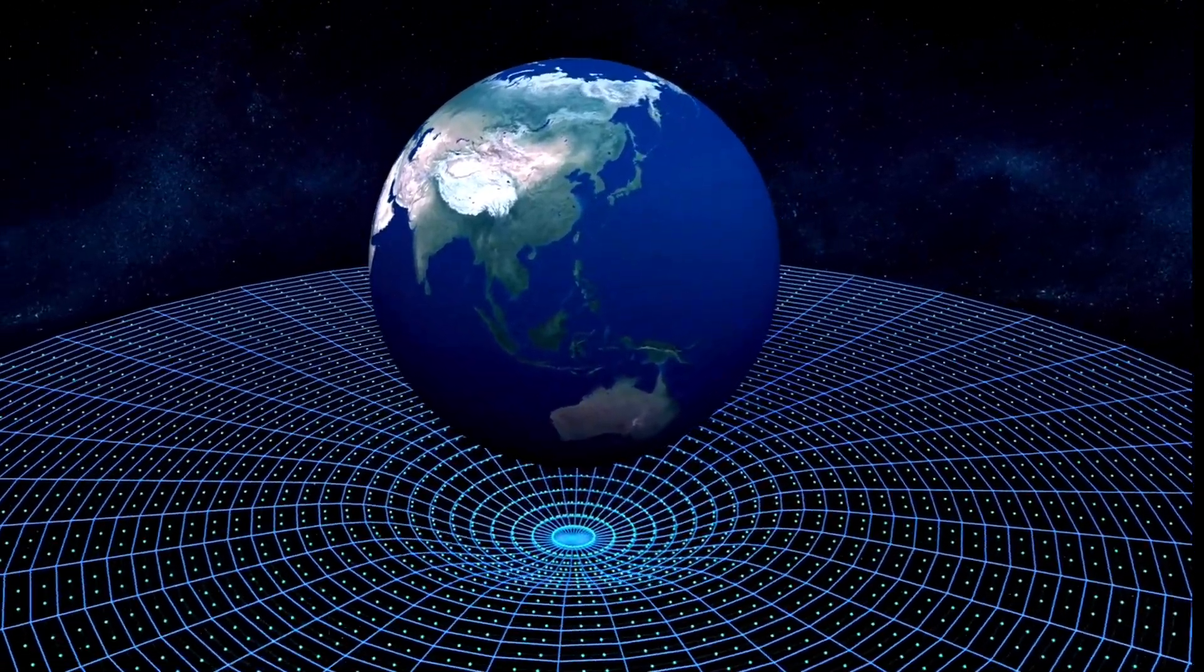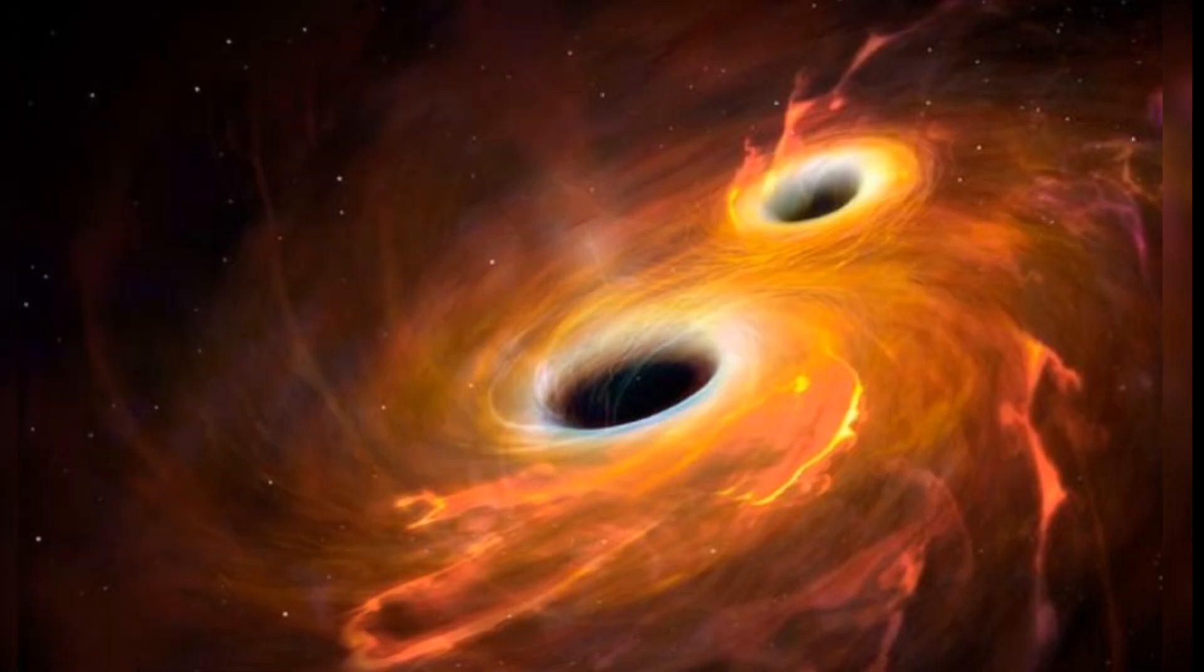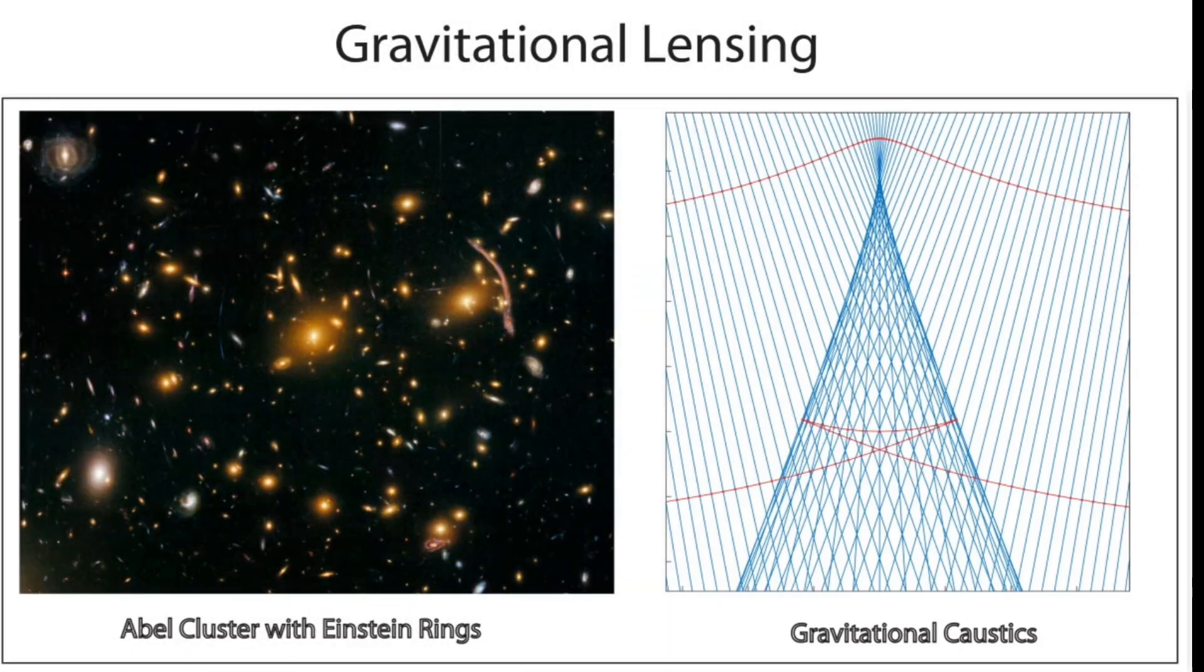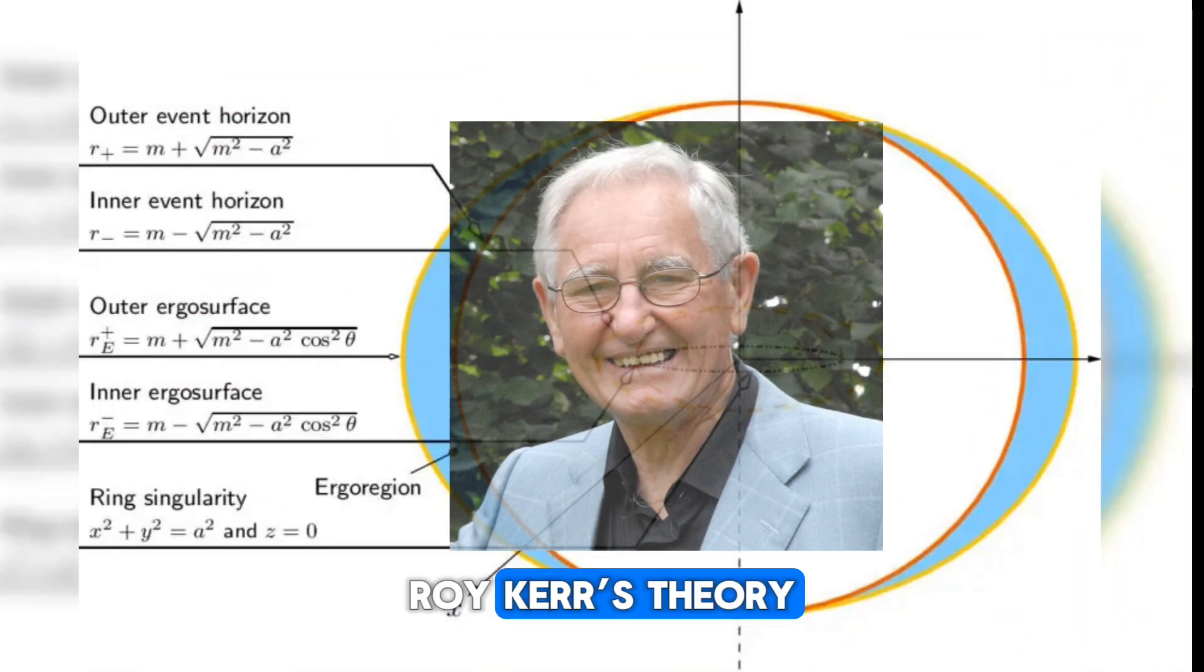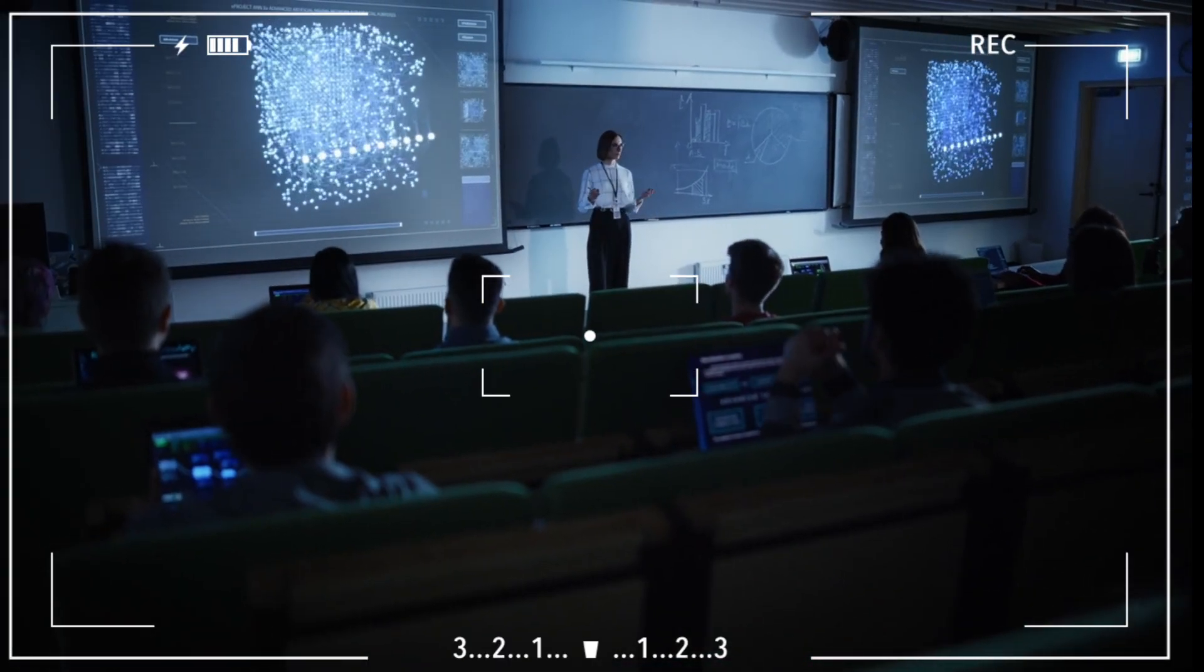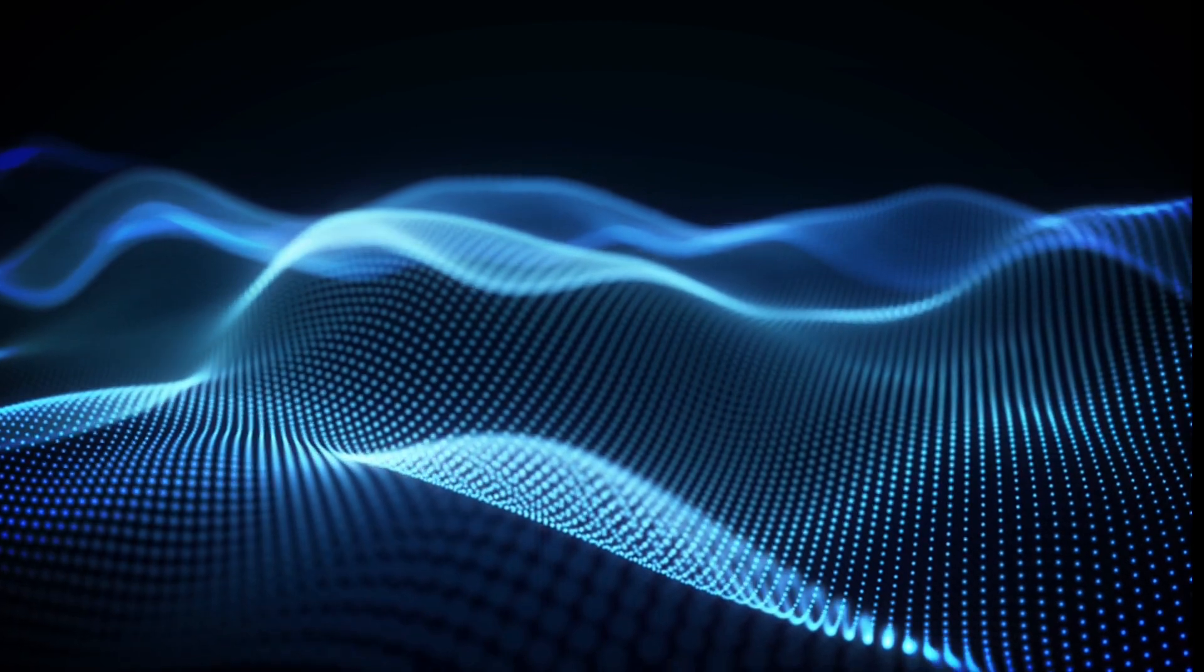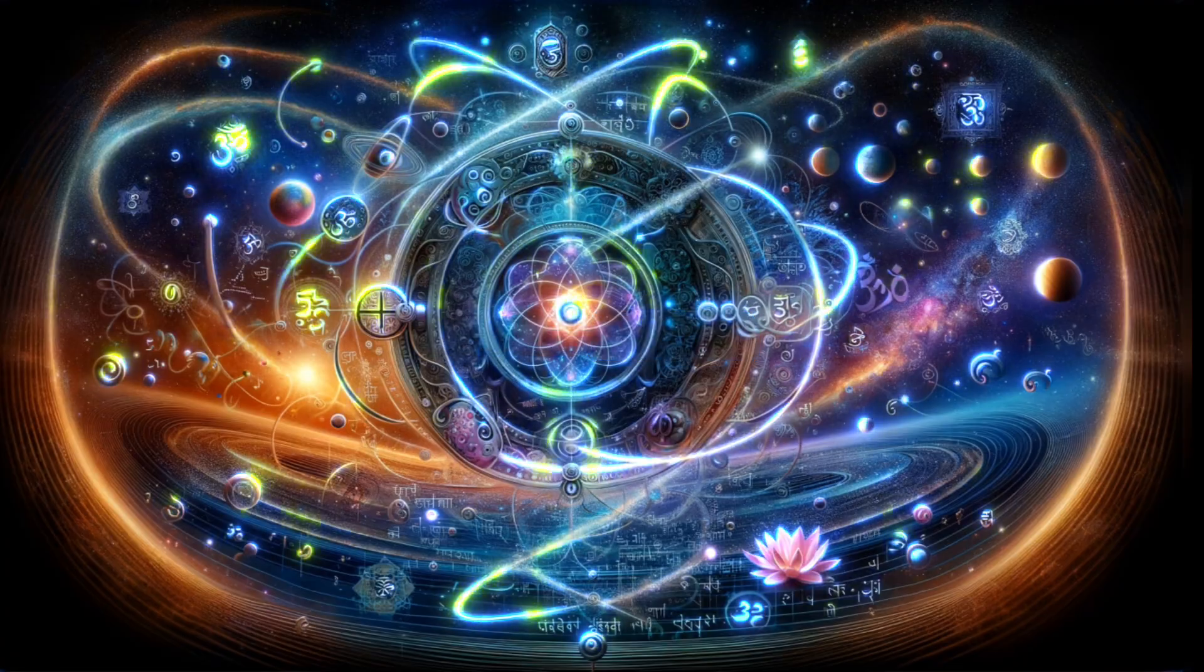Despite the advancements and refinements, the current understanding of the general theory of relativity remains highly valuable. The introduction of the concept of the ring singularity can be seen as an enhancement or upgrade to the original general theory of relativity. As we progressed from using Newton's gravity for rocket launches to Einstein's general theory of relativity for phenomena like gravitational lensing, Reicher's theory now contributes to our understanding of the interior of black holes. The quest for a complete understanding of gravity now turns toward quantum gravity and its true nature.